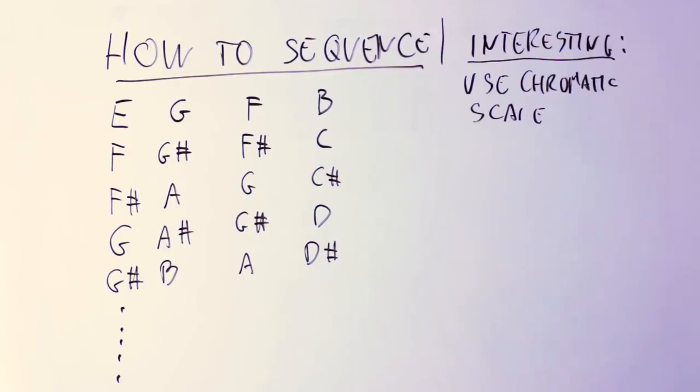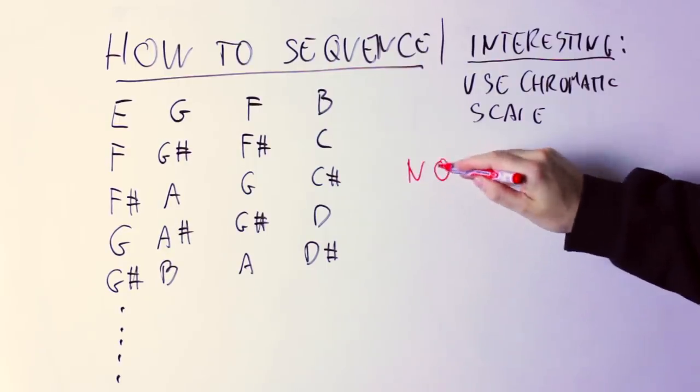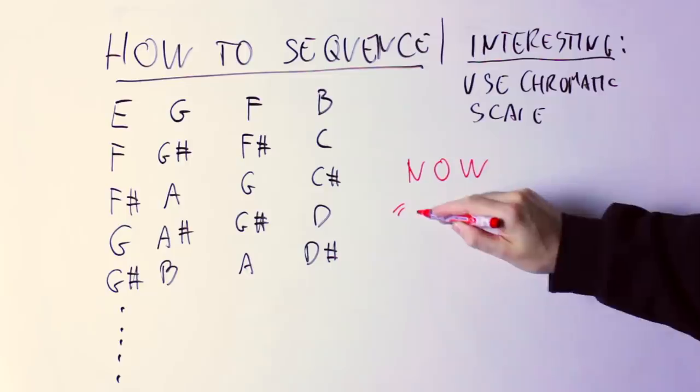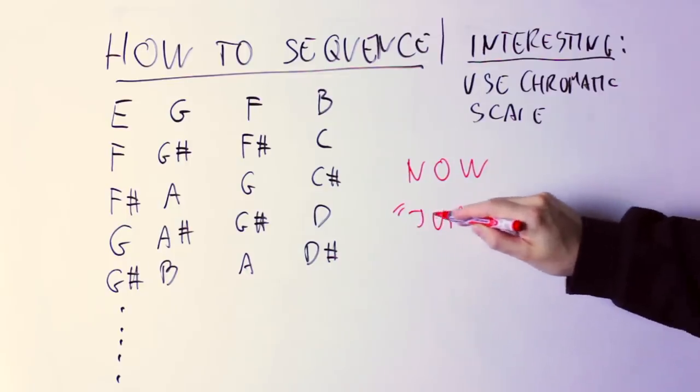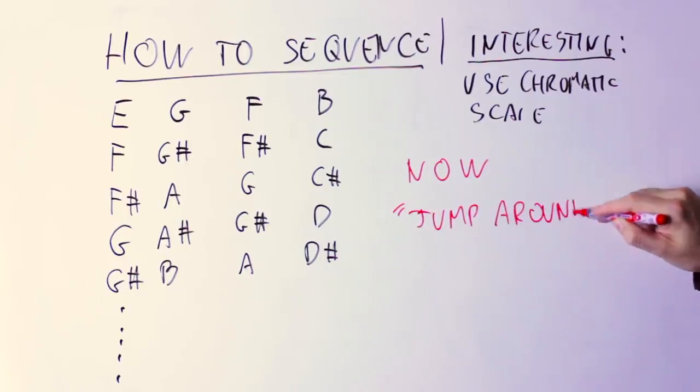But remember, you don't have necessarily to move fret by fret, you can jump around, and this is exactly what Corey Henry is doing in his solo. He's taking the same phrase and he's moving it around on the chromatic scale, that's why it sounds so modern. So you can just take a simple phrase like the one I just played and jump around the fretboard to make something interesting.